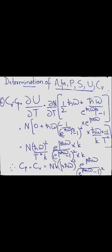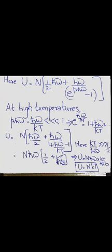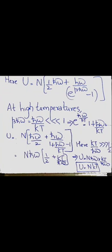The specific heat at constant volume equals the specific heat at constant pressure here: Cv = Cp = dU/dT. Differentiating U, the result is Cv = Nk (beta h-bar omega)^2 times e raised to beta h-bar omega, divided by (e raised to beta h-bar omega minus 1)^2. The internal energy is U = N[h-bar omega over 2 + h-bar omega / (e raised to beta h-bar omega minus 1)].